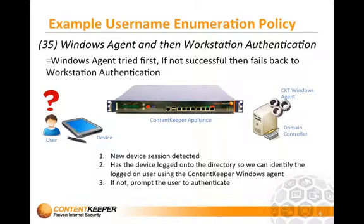One of the methods is called Workstation Authentication. You can combine that Workstation Authentication username enumeration method with a primary method, such as what we're seeing here. For example, Type 35 uses the Windows Agent and then falls back to Workstation Authentication. So essentially, the Content Keeper appliance deployed as a Layer 2 Ethernet bridge sees a new user session IP address, not aware of who the user is behind that IP address, tries the Content Keeper Windows Agent first, which runs on the actual domain controller. If it's not able to identify the user that way — because the device is typically not a member of a domain, which of course a tablet will not be — then it falls back to Workstation Authentication, which is the authentication form that is brought up and shown to the user.